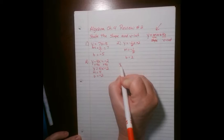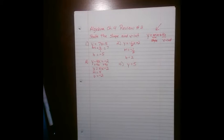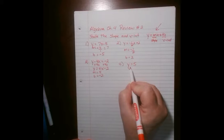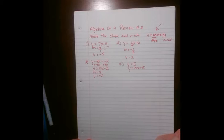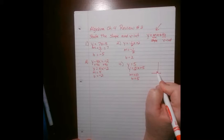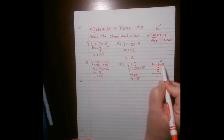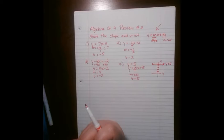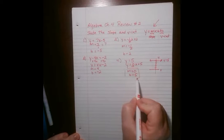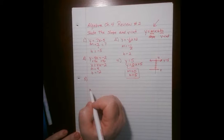For number 4, y equals 5. We should have memorized that y equals a number is a horizontal line going through 5. There's no x term — 0 times x makes it go away — so this has a slope of 0 and a y-intercept of 5. If we graphed it, this would be a horizontal line going through 5. Horizontal lines have a slope of 0, so all of that goes together.